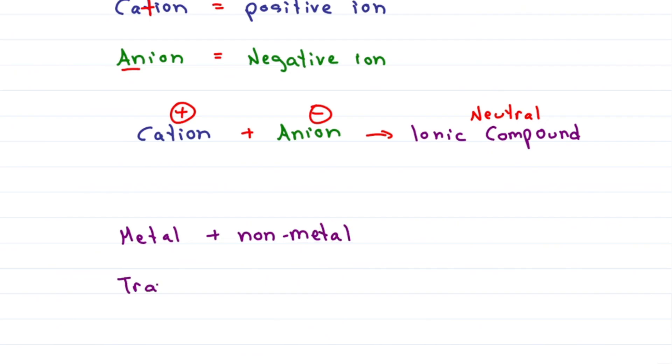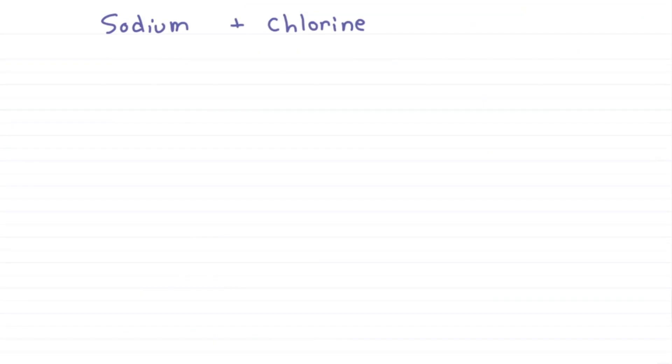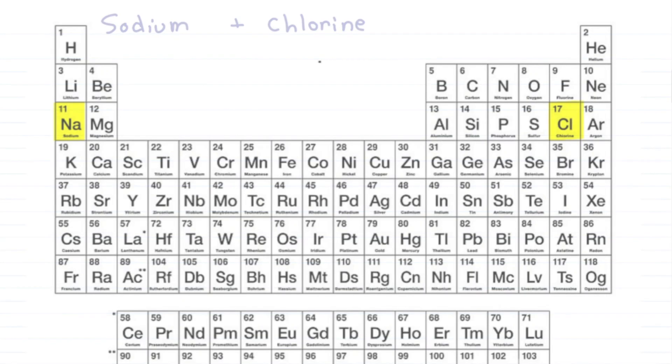We'll look at metals and non-metals, transition metals and polyatomic ions, starting simple with sodium and chlorine. First we find them on the periodic table.